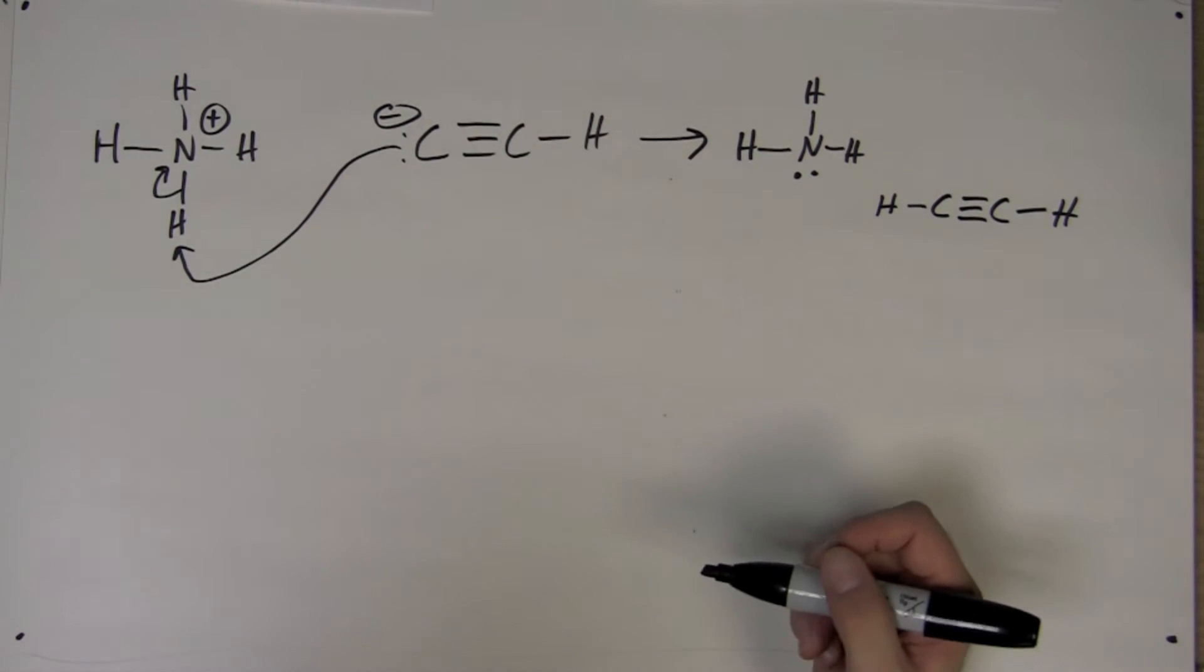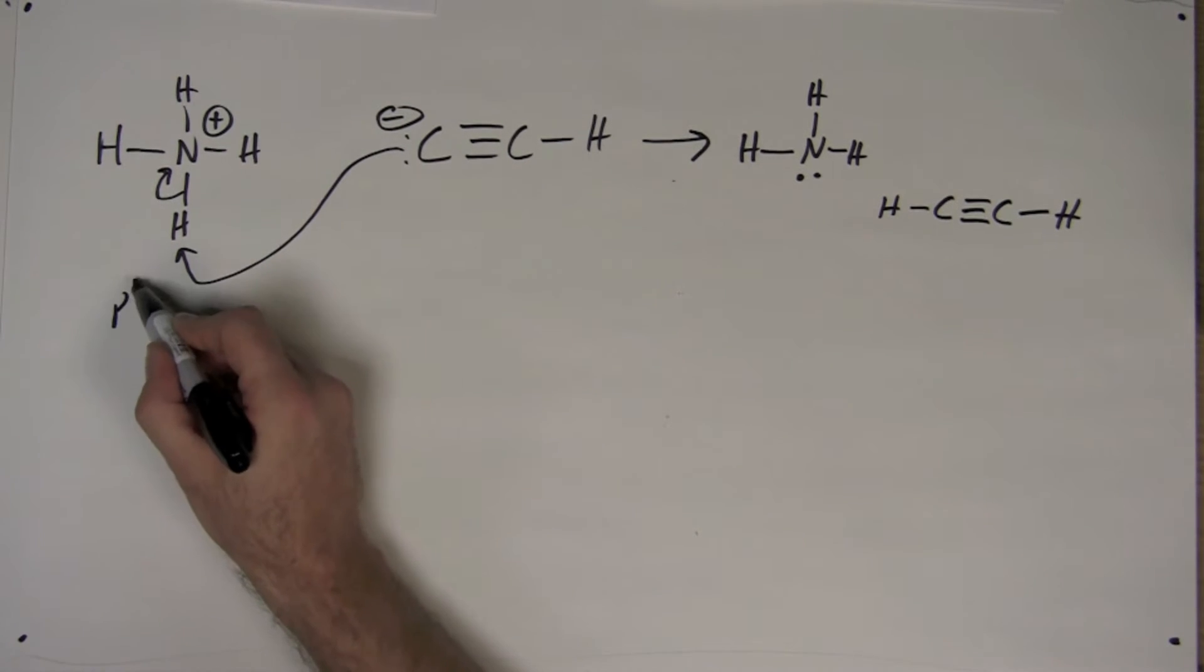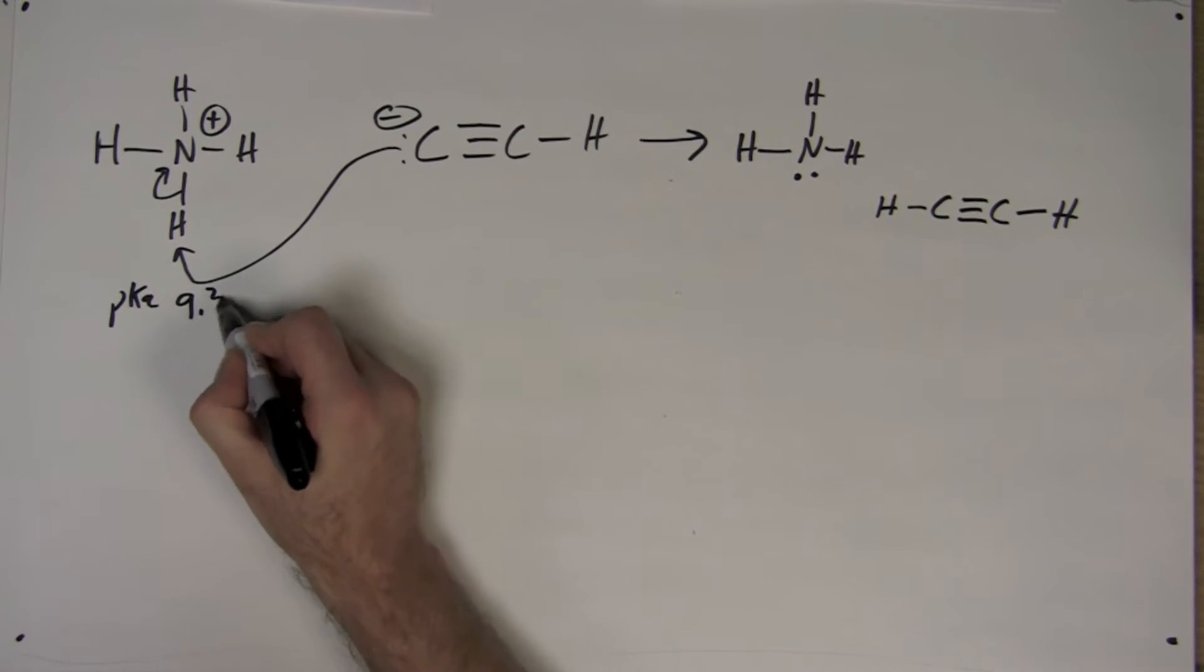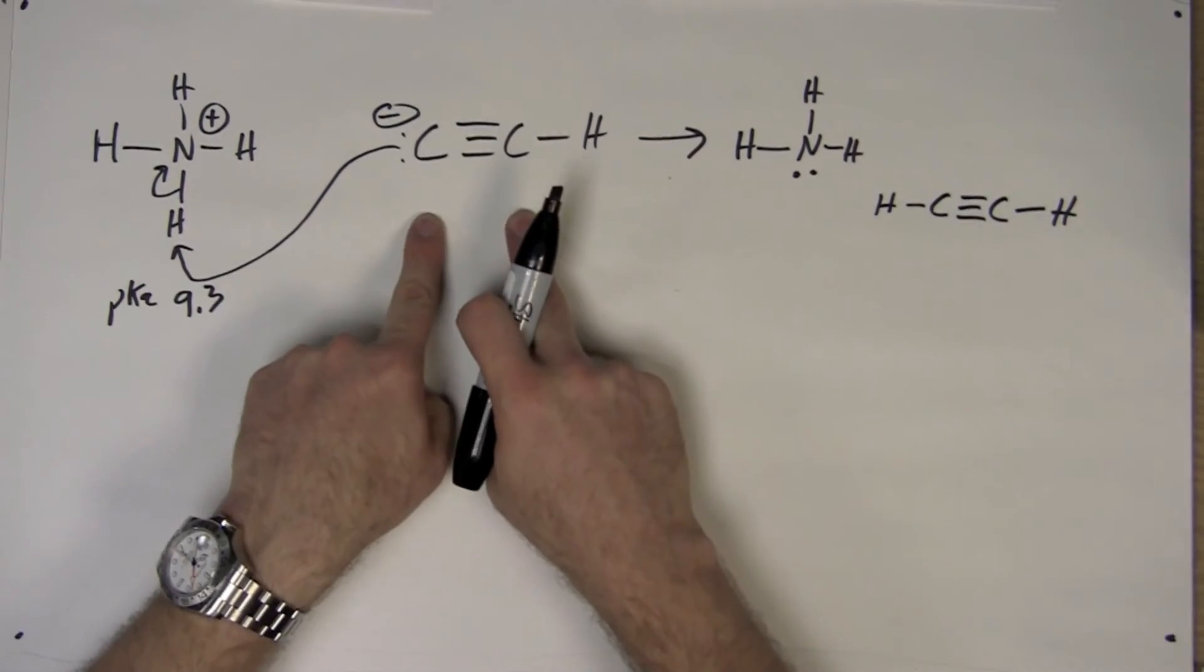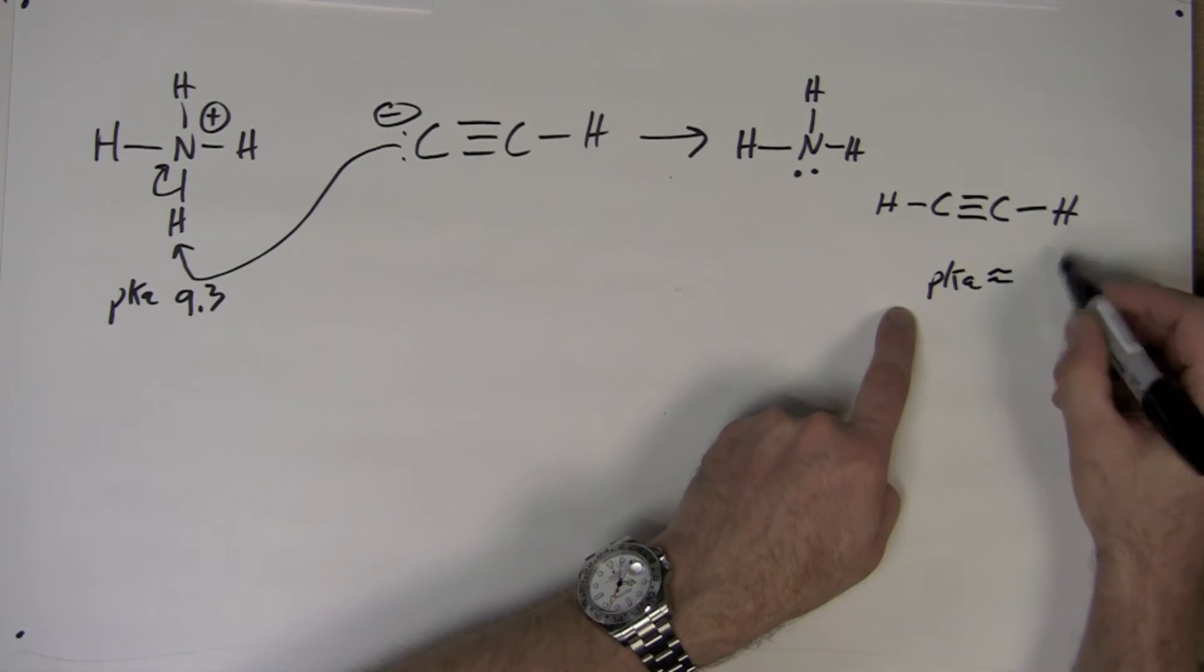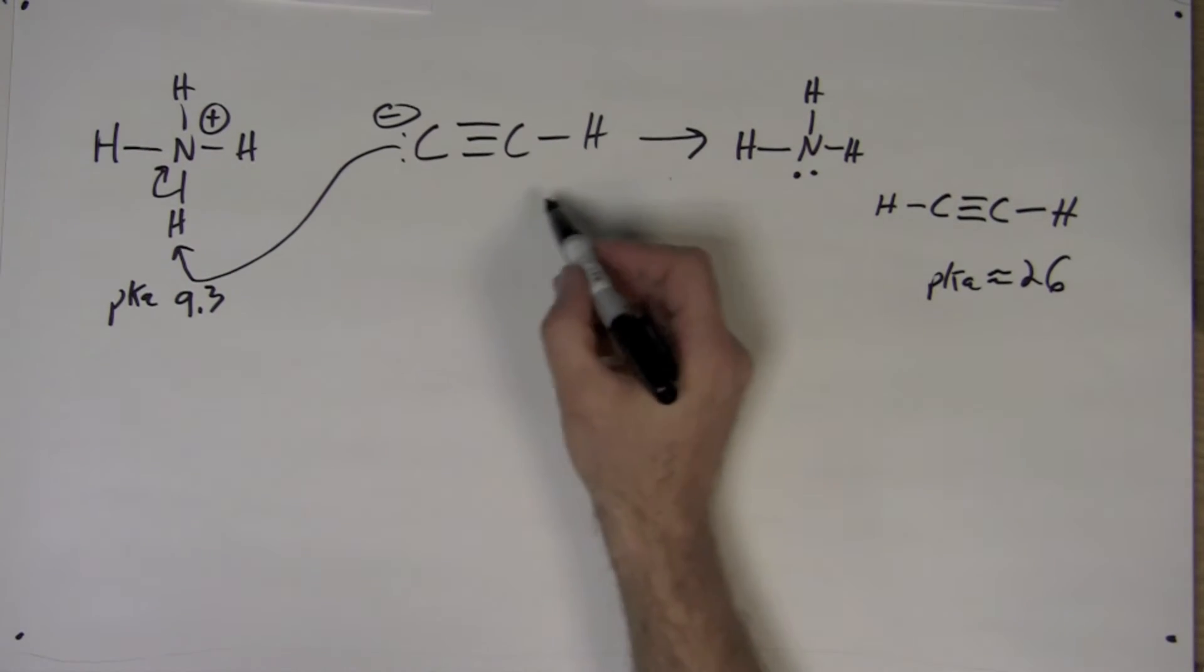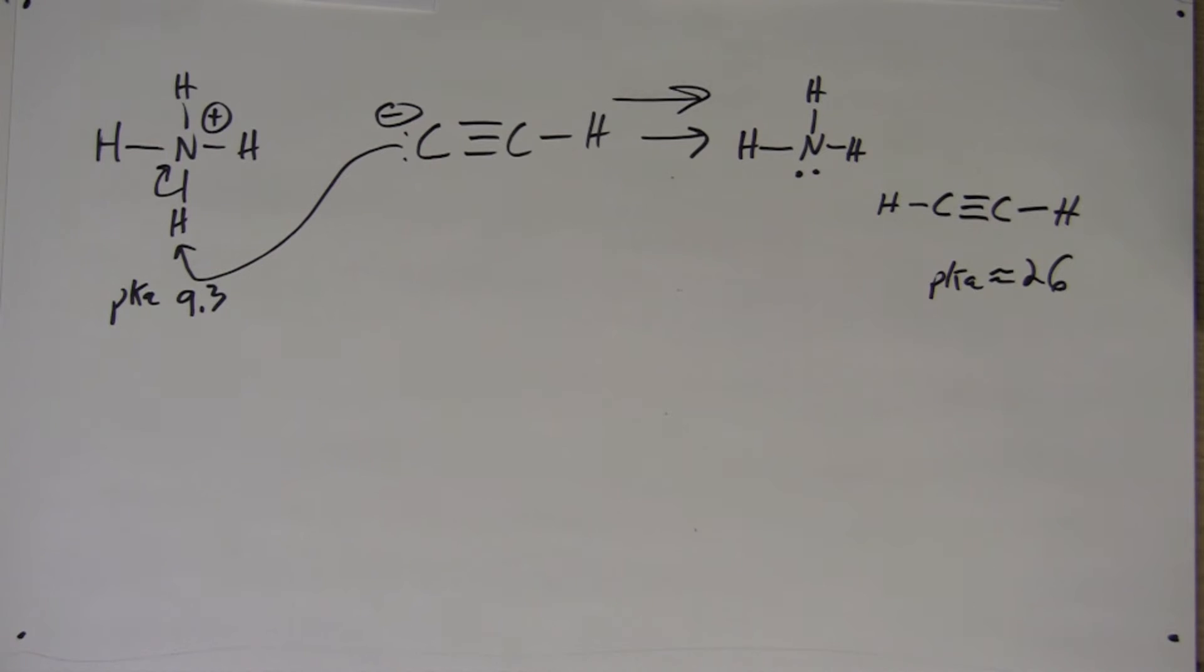If we use the table again and look at the pKa values, we'll see that the pKa of this acid is 9.3. The pKa of this acid is about 26. Therefore, the equilibrium of this reaction is shifted to the right-hand side.